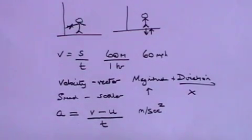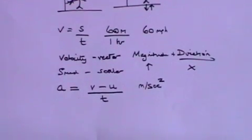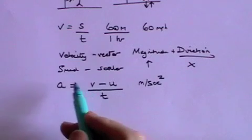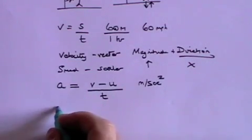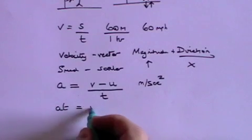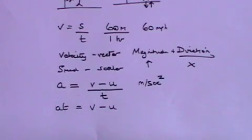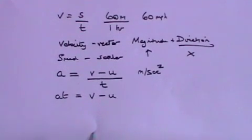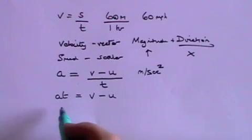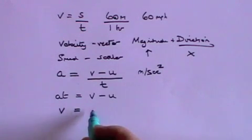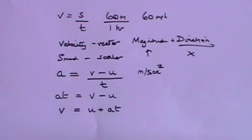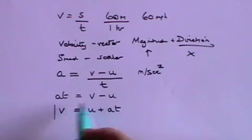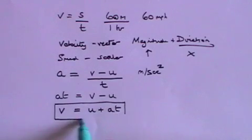Now we can start to derive some useful equations. From the acceleration equation, if we multiply both sides by t, we get at equals v minus u. Rearranging, we get v equals u plus at. That's our first main formula: if you start with an initial velocity u and accelerate at rate a for time t, your new velocity will be v.